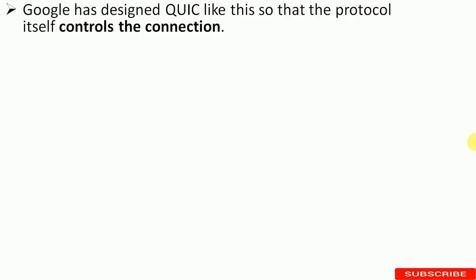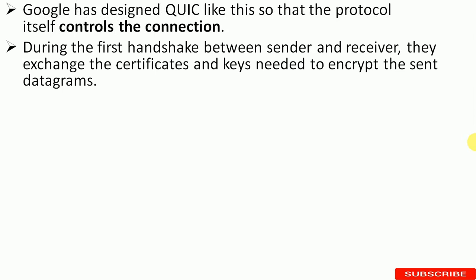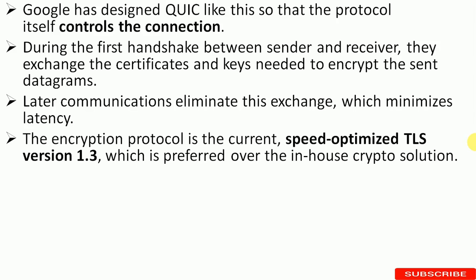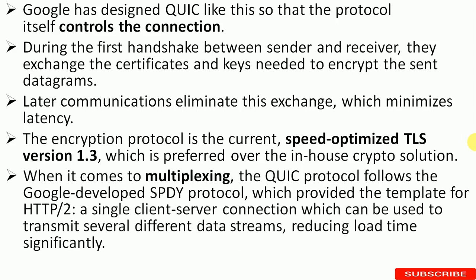Google designed QUIC so that the protocol itself controls the connection. During the first handshake between sender and receiver, they exchange the certificates and keys needed to encrypt the sent datagrams. Later communication eliminates this exchange, which minimizes latency. The encryption protocol used is the speed-optimized TLS version 1.3, preferred over in-house crypto solutions. When it comes to multiplexing, QUIC follows the Google-developed SPDY protocol, which provided the template for HTTP/2 — a single client-server connection that can transmit several different data streams, reducing load time significantly.